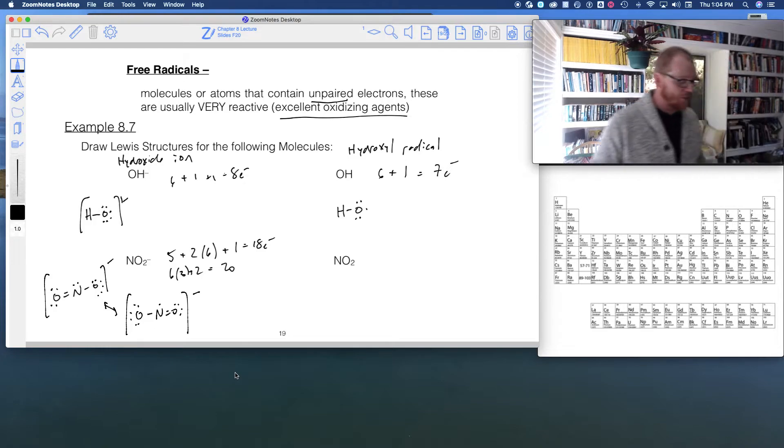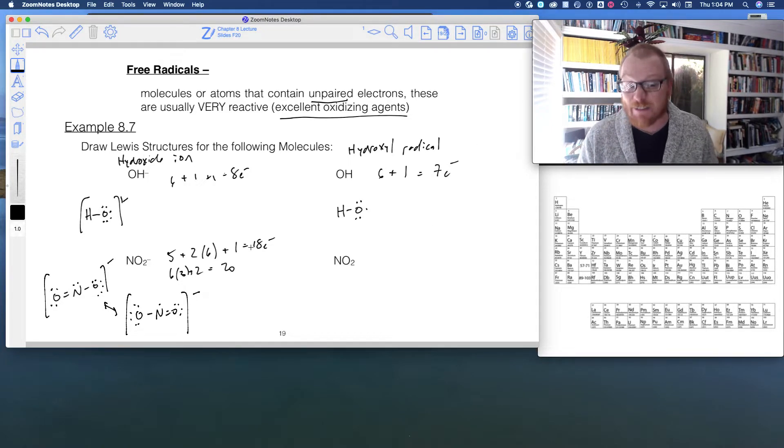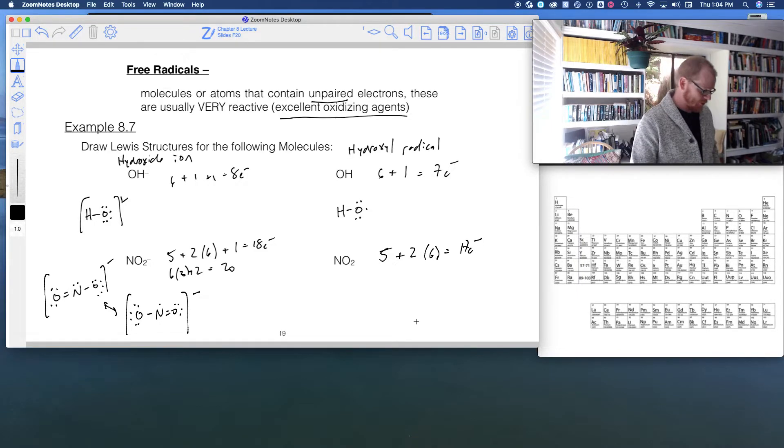So now, what about this NO2? So what about this NO2? Well, if we were to count up these things, then what we would actually find is that it has 17. You can see it's five plus two times six. Five for nitrogen plus two oxygens times six. That gives me 17. But we know that we need to distribute 20 of these things around.